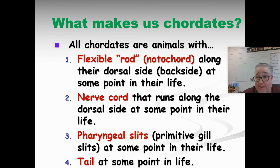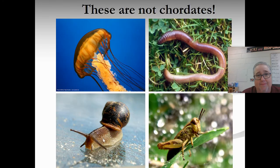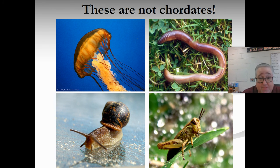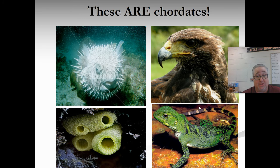All chordates also have a tail at some point. Humans don't seem to, but in the embryonic stage we actually do have very primitive tails. As the embryo develops, we lose that tail — it recedes and becomes part of our backbone. Jellyfish, earthworms, slugs, snails, and insects don't have these chordate traits. Those are all invertebrate animals. Not every animal is a chordate, but birds, fish, and reptiles are chordates.